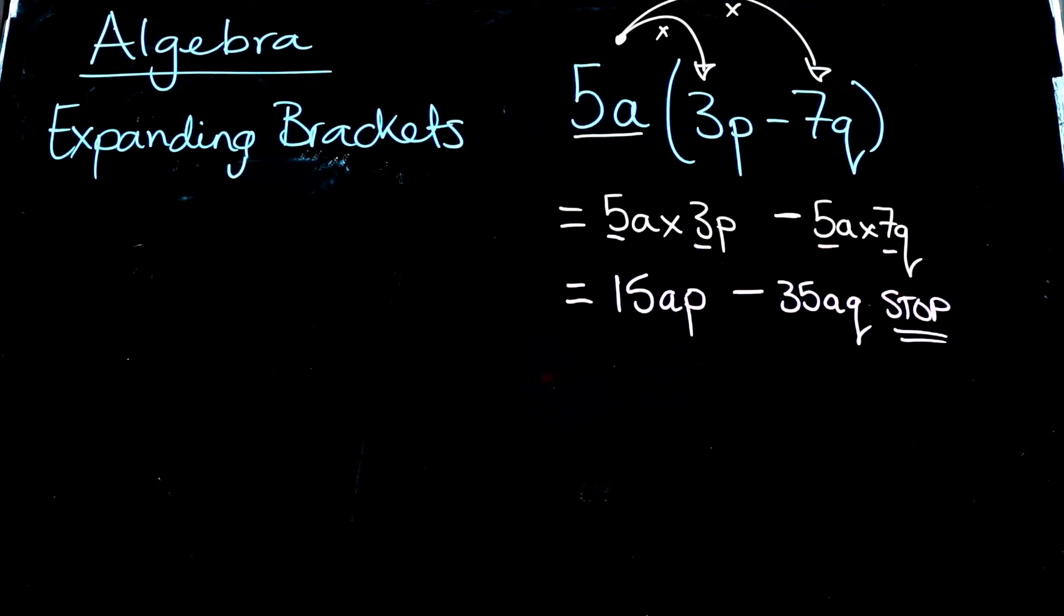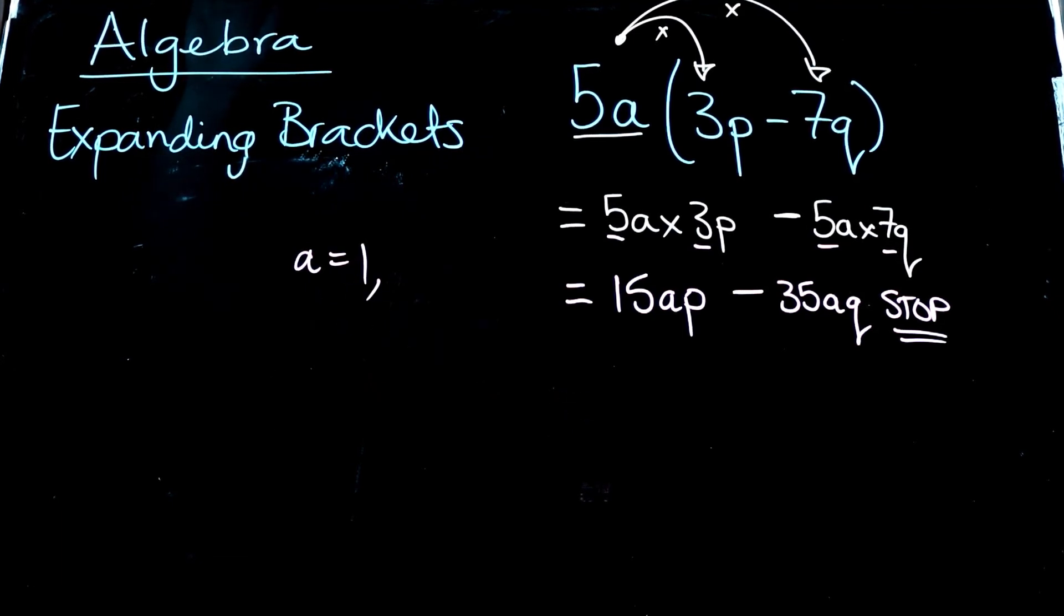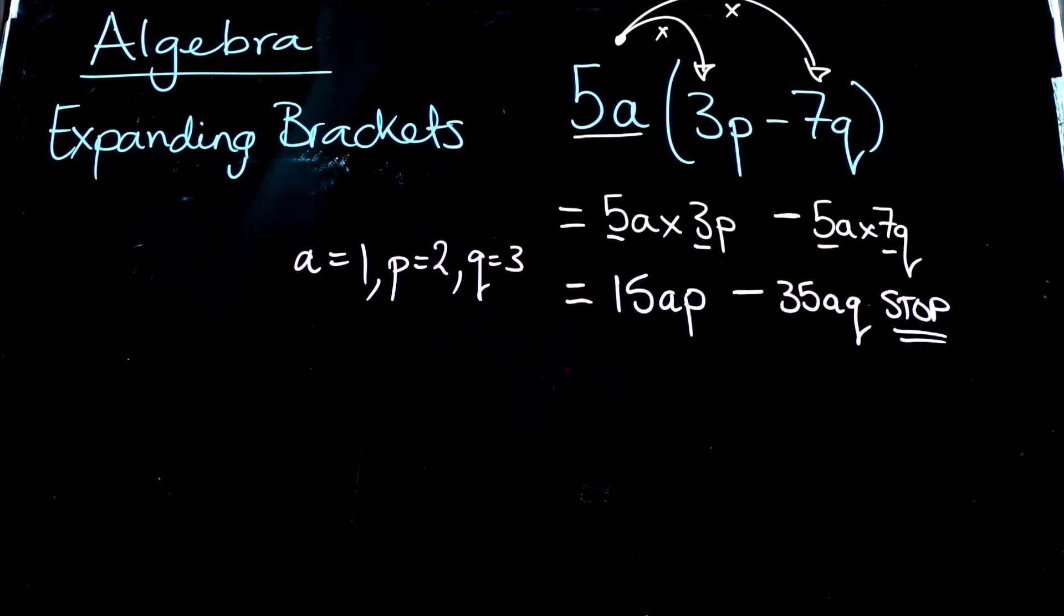Unless, of course, we're told, we're told what the value of a is, what the value of p is, and also q. We need to know those things. So for example, if we've got those things and we're told, for example, that a is equal to 1, and p is equal to 2, and q is equal to 3, we can go ahead with the substitution step.